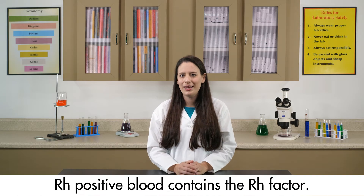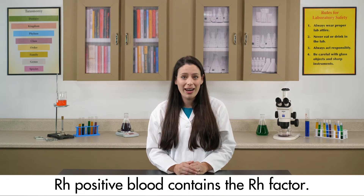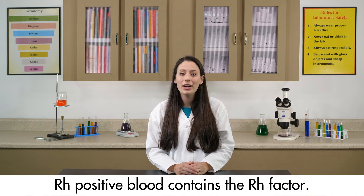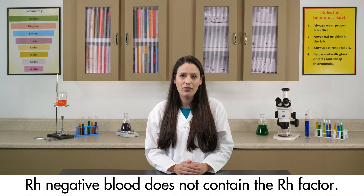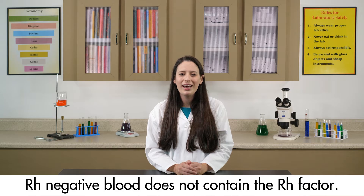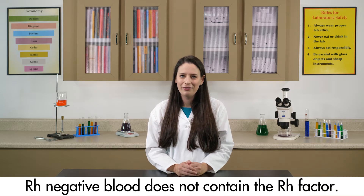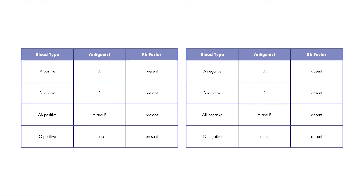Any blood type that contains the Rh factor is called Rh positive. If blood does not contain the Rh factor, it is called Rh negative. This table will give you a better understanding of the eight different blood types.